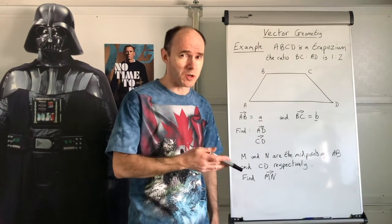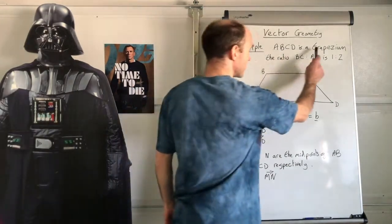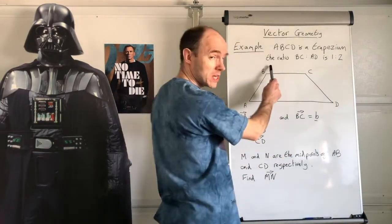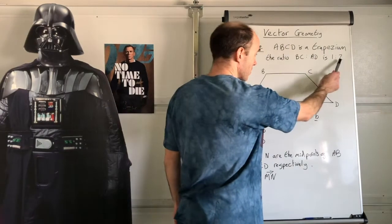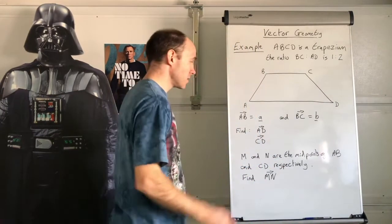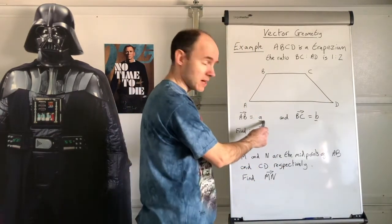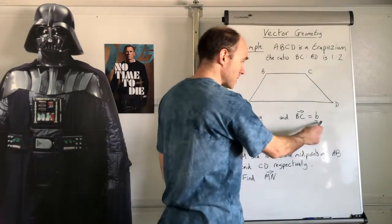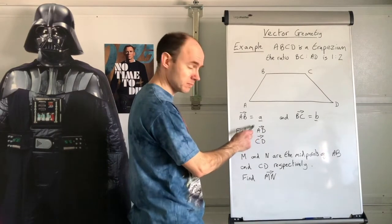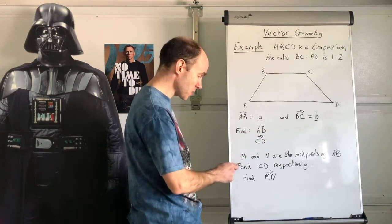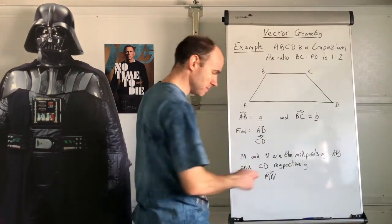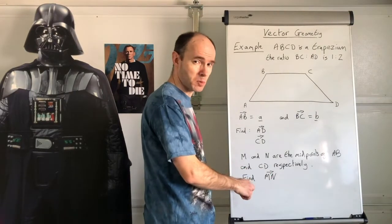Here's the next example. ABCD is a trapezium. The ratio BC to AD is one to two. AB is represented by vector a, and BC is represented by vector b. Find AD, find CD, and then — M and N are the midpoints of AB and CD respectively — find MN. Pause the video and go.